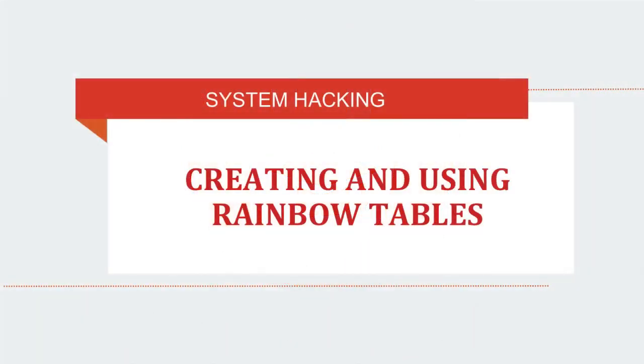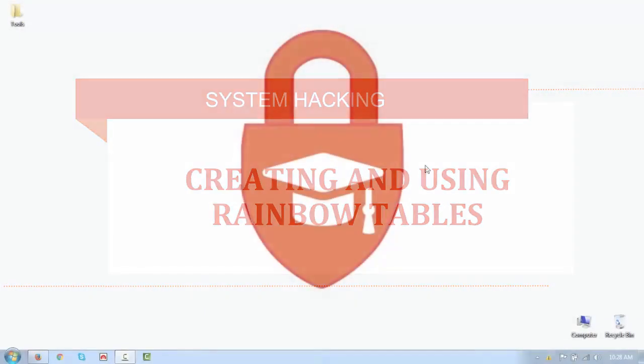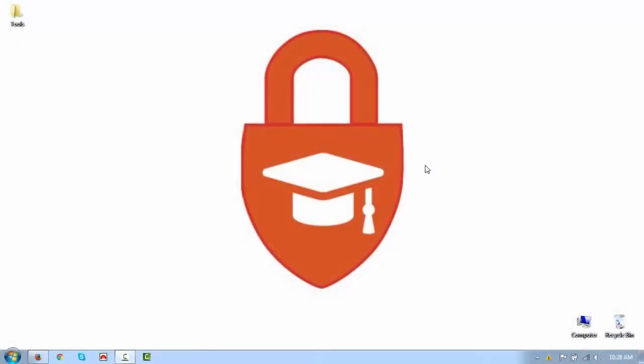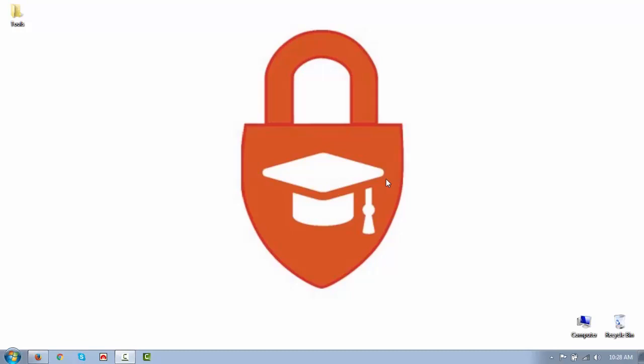Hello everyone, welcome to Cyber Security Think Tank. We are going to start the second lab of Module 5: System Hacking. This lab is simply creating and using the rainbow table. We are going to use WinRTGen, a graphical rainbow table generator that supports all kinds of hashes including LM, NTLM, SHA, SHA-2, 128 and 256 bits.